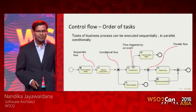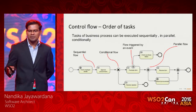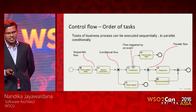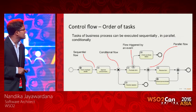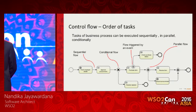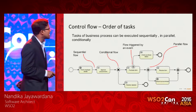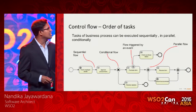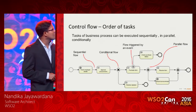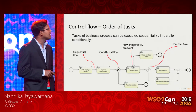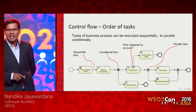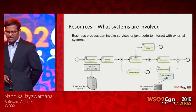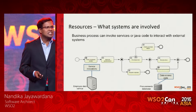In the control flow, you define how control moves through the process. Tasks can be executed sequentially, one after the other. You can have conditional flow — an if-condition — where control divides along either path depending on the condition. There are also event-triggered flows, where an event triggers a specific path, and parallel execution, where control goes through both paths simultaneously.